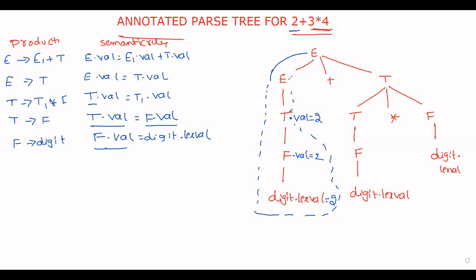Now E. E dot value is equal to T dot value, that is 2. And again this one, the value is 3. Same logic. F dot value is equal to digit dot lex value. T dot value is equal to 3, in the same process.